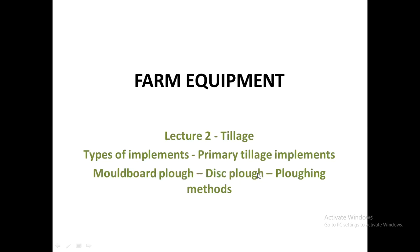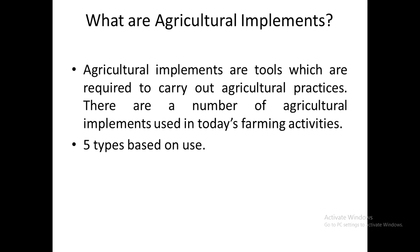In today's lecture we will see about the different types of implements used for tillage and we will see about the primary tillage implements in detail. Agricultural implements are tools which are used to carry out agricultural practices in the field. They can be used before cultivation, during cultivation, or even when there is no cultivation or agricultural activity going on in the field.